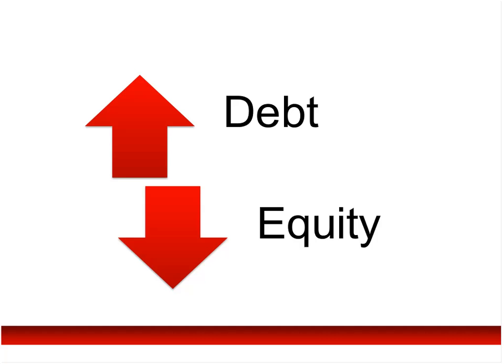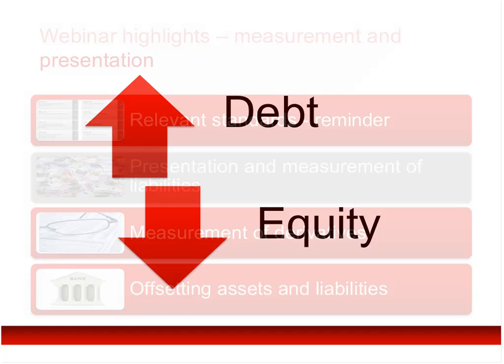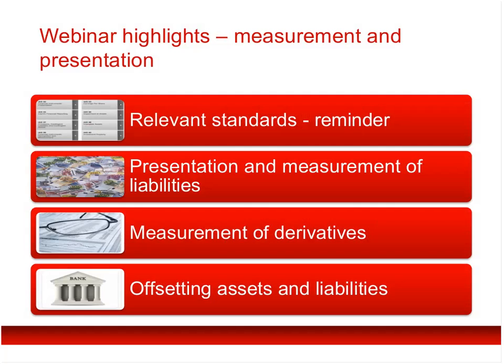So one thing we're going to look at quite a lot here today is different attributes for shares and for other financial instruments that would have been presented in different parts of the balance sheet and measured differently. Nowadays, not all shares are shares. Some shares have got the attributes of a liability and they need to be presented with debt, and the financing for those needs to be presented as a cost of debt, not as a dividend.